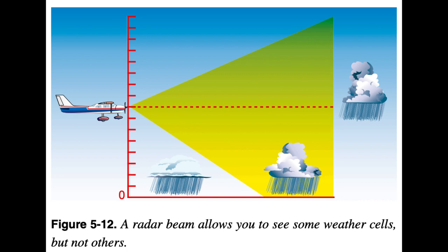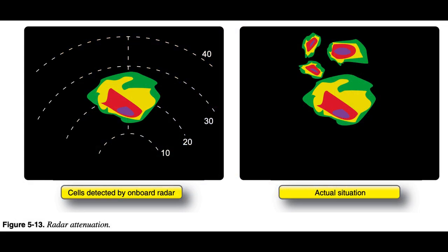The two additional cells in Figure 5-12 are present, but not detected by the onboard weather radar system. When a cell is detected by an onboard weather radar system, that cell often absorbs or reflects all of the radio signals sent out by the radar system. This phenomenon, called attenuation, prevents the radar from detecting any additional cells that might lie behind the first cell. Figure 5-13 illustrates radar attenuation, in which one cell shadows another cell.